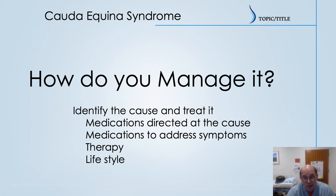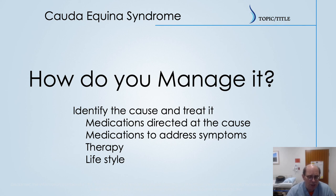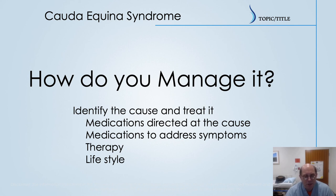You can then start medications to address the symptoms — medications that may try to quiet down bowel or bladder symptoms, or if there's muscle pain going on, trying to address that pain. But a big part of managing cauda equina syndrome in the chronic phase is therapy and lifestyle: trying to get the muscles and nerves to function better — for both bowel, bladder, and the legs — trying to improve and promote recovery.